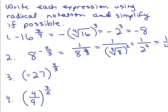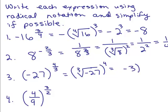Next: the minus sign is inside the parentheses, so the base is negative 27. Take the cube root of negative 27 — which is negative 3 — and then raise it to the 4th power. That means negative 3 times negative 3 times negative 3 times negative 3, which is positive 81.